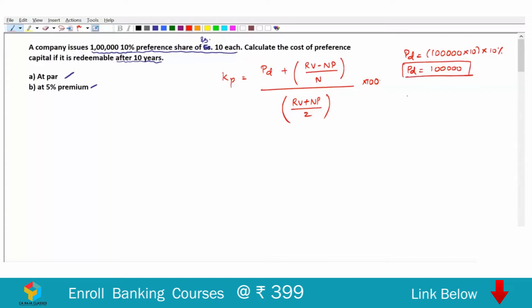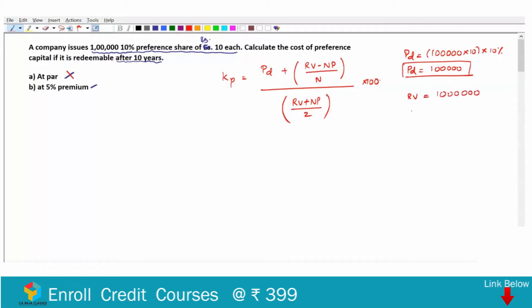Then what is RV? It is redemption value. In first question it is at par. So 1,00,000 into 10, 10,00,000 is RV. What is net proceeds? That is the amount that is collected. And here no other information, so we will take it at face value itself. So net proceeds is also 10,00,000.